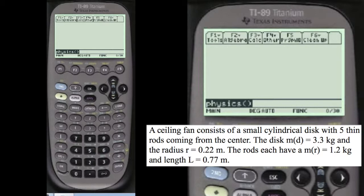I'm going to read this problem that was given to me. A ceiling fan consists of a small cylindrical disc with five thin rods coming from the center. The disc mass m equals 3.3 kilograms and the radius r equals 0.22 meters. The rods each have a mass of 1.2 kilograms and length L equals 0.77 meters.